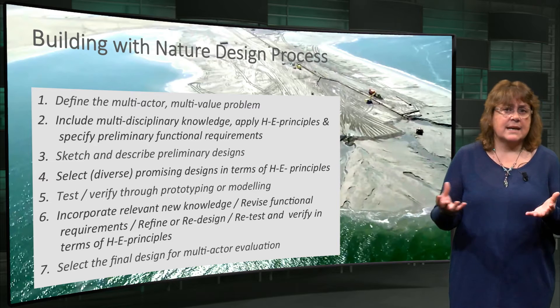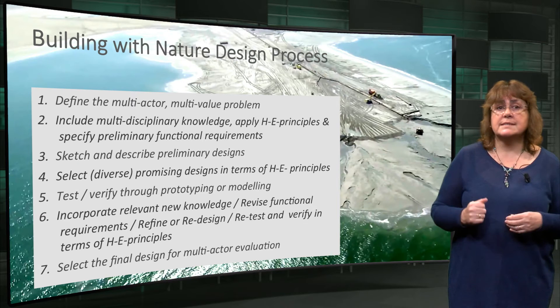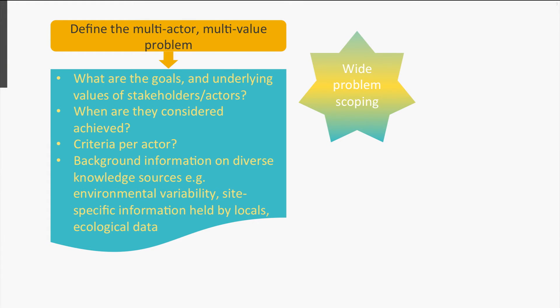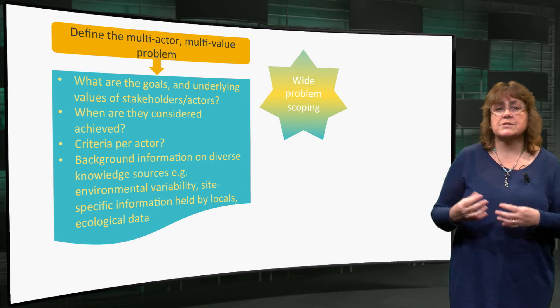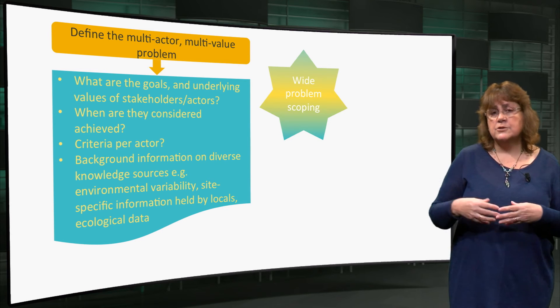So, how does the building with nature design process differ from the conventional engineering design process? Let's move through each of these steps and clarify the differences. Step 1: Define the multi-actor, multi-value problem. This means scoping the problem very widely and taking the diversity of perspectives and values on the issues into account. It represents a fundamentally different starting point, in which a single client is not viewed as representing societal or ecosystem needs. There is also a deep acknowledgement of different sources of knowledge on the environment, varying from that possessed by local residents to official data sources.